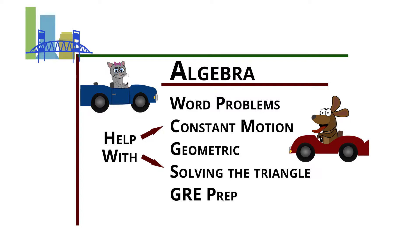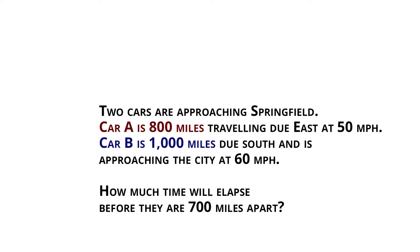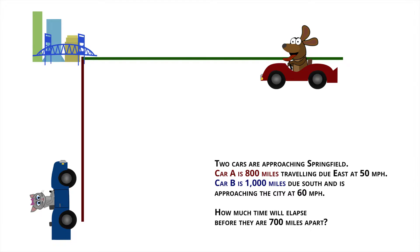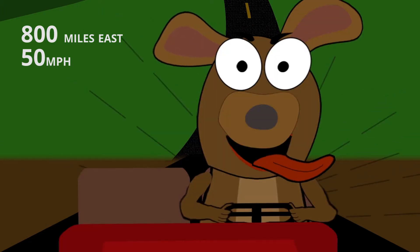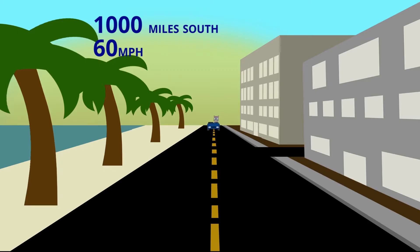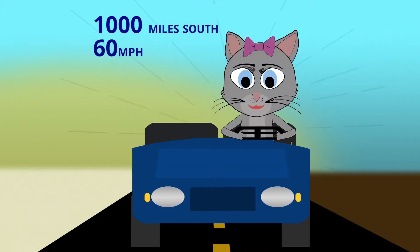We have constant motion in that we have two cars approaching the city of Springfield. One car is approaching from due east and is traveling at 50 miles per hour and is 800 miles from Springfield. And our other car is 1,000 miles due south of Springfield and is approaching at 60 miles per hour.